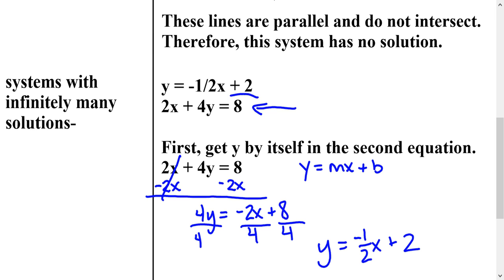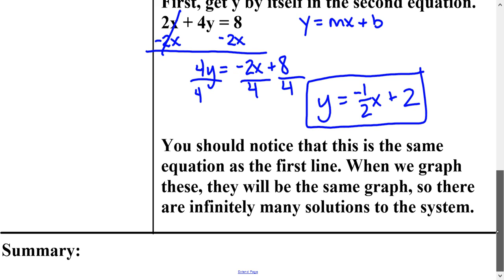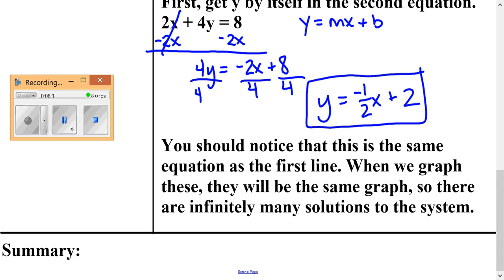So now if you look, these two equations are the exact same line. So if I was to try to graph both of them, really I could only graph one because the other one would graph exactly on top of the first. So that's why there are infinitely many solutions, because they would cross at every single point possible. So make sure that you go back and answer the essential question and write your summary. All right. Thank you.